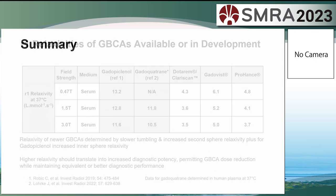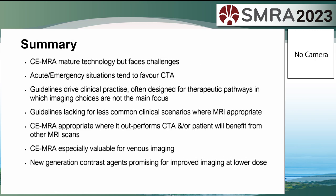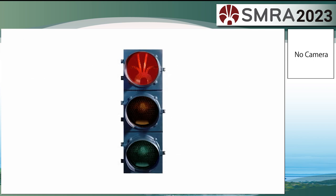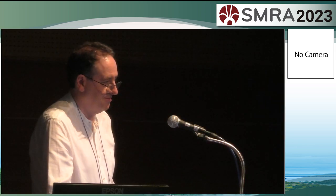In summary, contrast-enhanced MRA is a mature technology but faces many, many challenges. Acute situations tend to favour CT. Guidelines are pushing us towards CT for many things. We need our society to put in place guidelines where MRI and MRA are appropriate — these tend to be more niche applications. Particularly, we need to concentrate more on venous imaging.